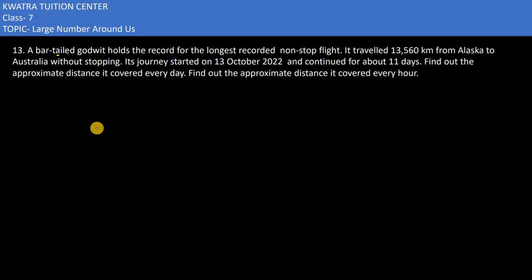Now the next one: a bar-tailed godwit holds the record for the longest recorded non-stop flight. It traveled from Alaska to Australia without stopping. Its journey started on 13 October 2022 and continued for 11 days. Find out the approximate distance it covered every day, and find out the approximate distance it covered every hour.